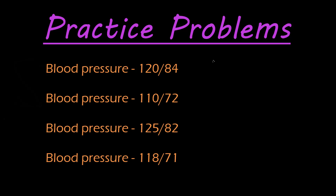I've set up here some practice problems that we can do for calculating the mean arterial pressure. We have four blood pressures here. Let's start calculating mean arterial pressure. The formula is systolic pressure plus two times the diastolic pressure, divided by three.